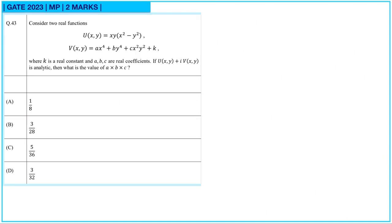Next question. Consider two real functions u and v where k is a real constant and a, b, c are real coefficients. If u + iv is analytic, then what is the value of a·b·c? If it is an analytic function, it will satisfy the Cauchy-Riemann equations.